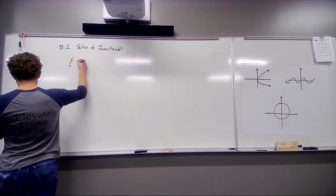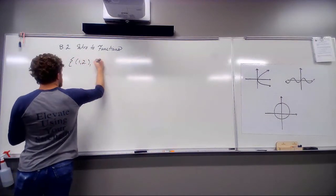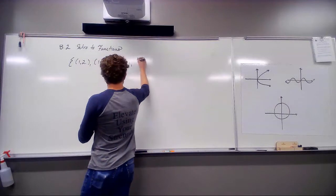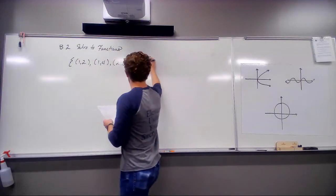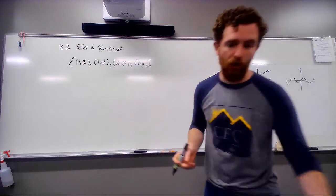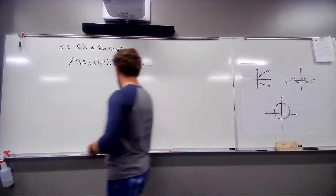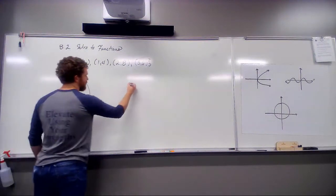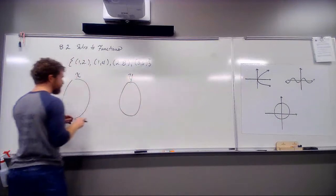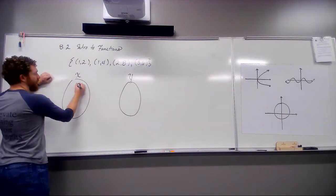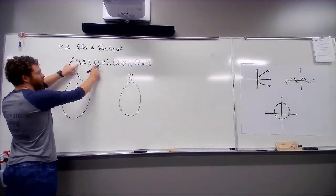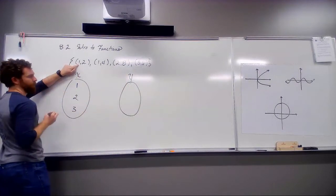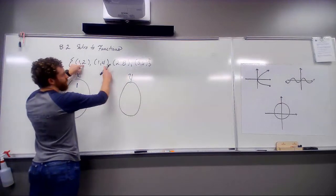So, if I look at that first one: 1, 2. 1, 4. 2, 8. 2, 6. 3, 8. So, you might be able to tell already whether or not this one is a function. So, let's do that cloud chart diagram we did the other day. I'm going to get all my x's over here, not doing any repeats, so I've got one appears twice and just write it once. Two, three. I've got two, four, six, and eight.